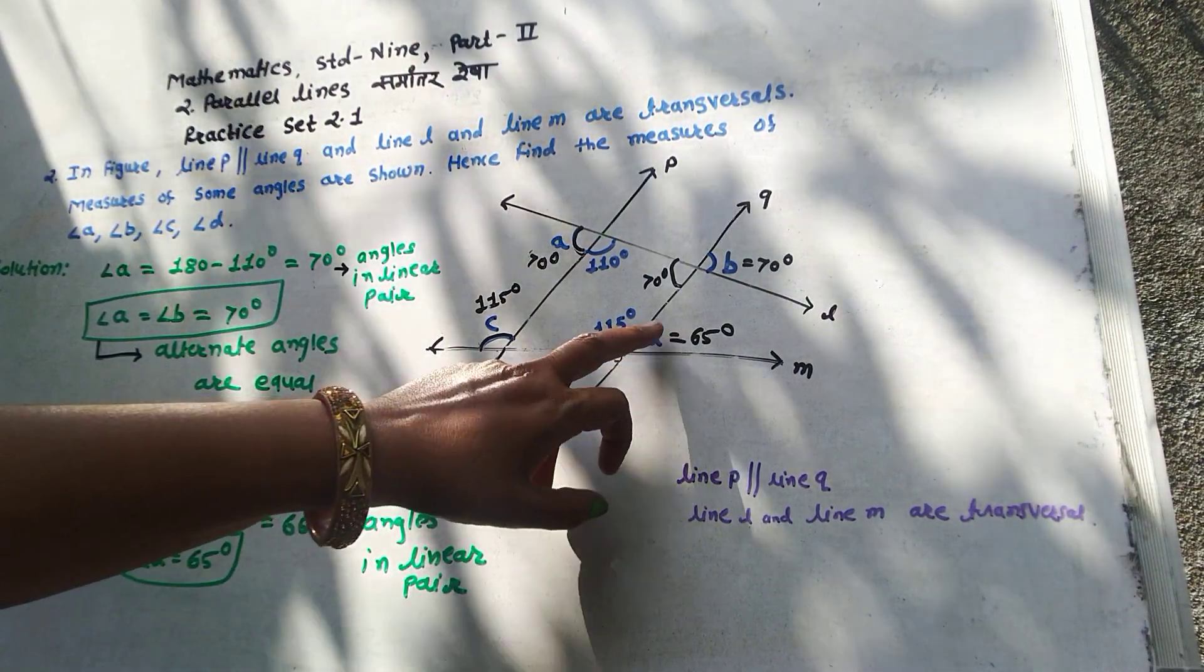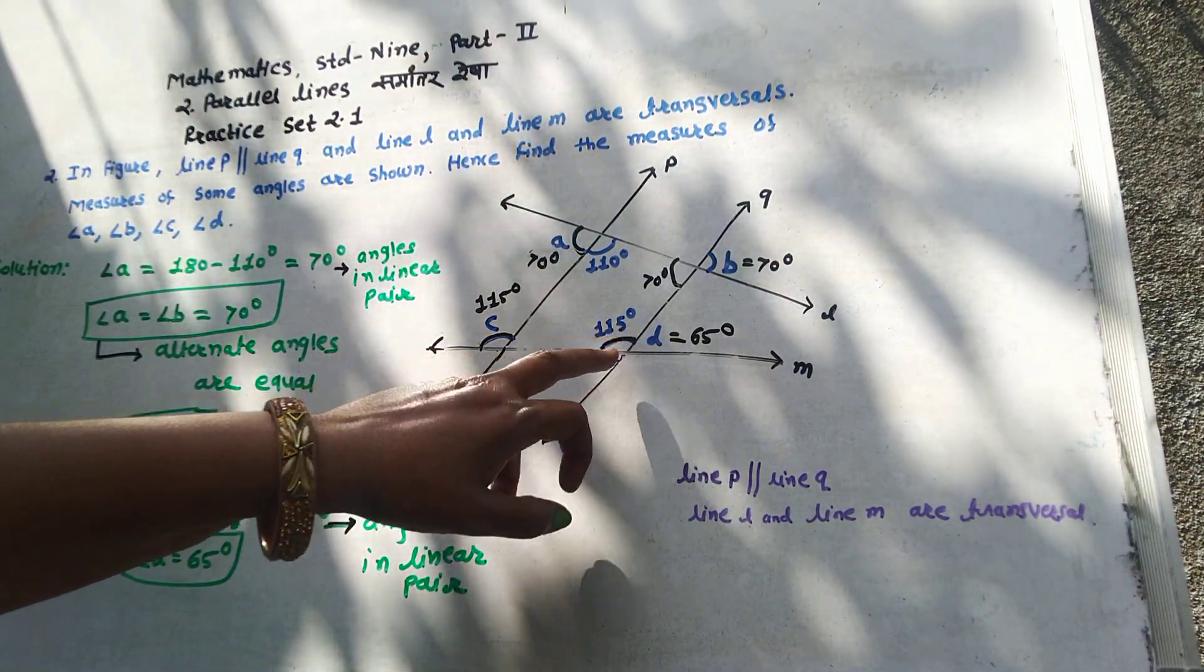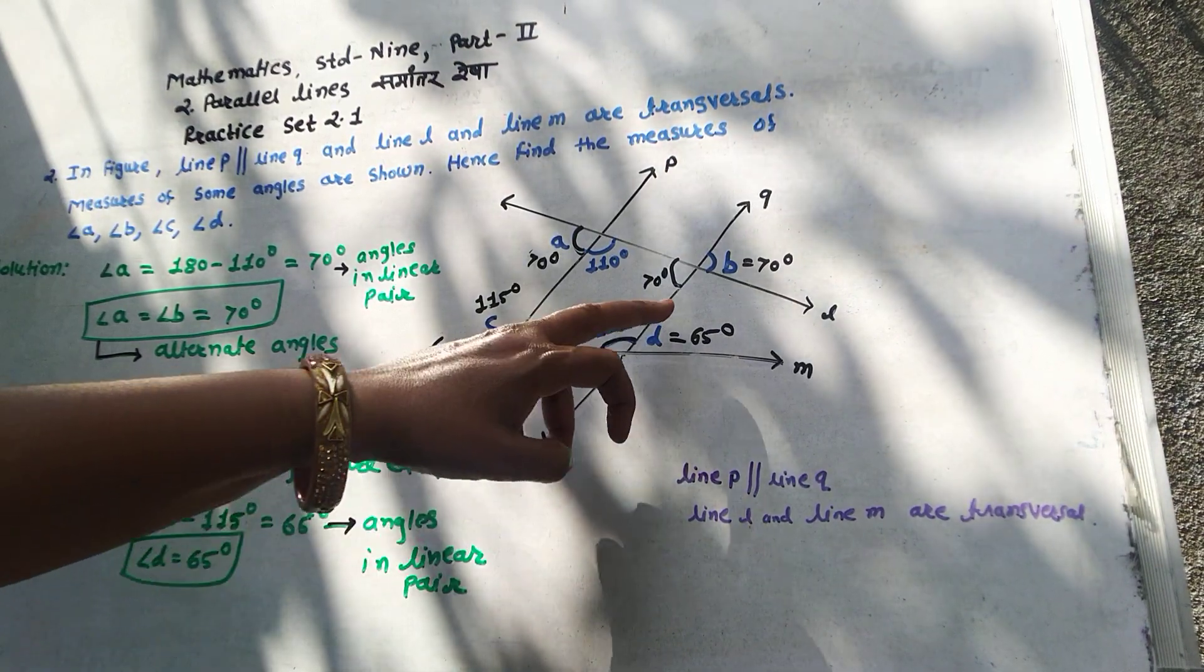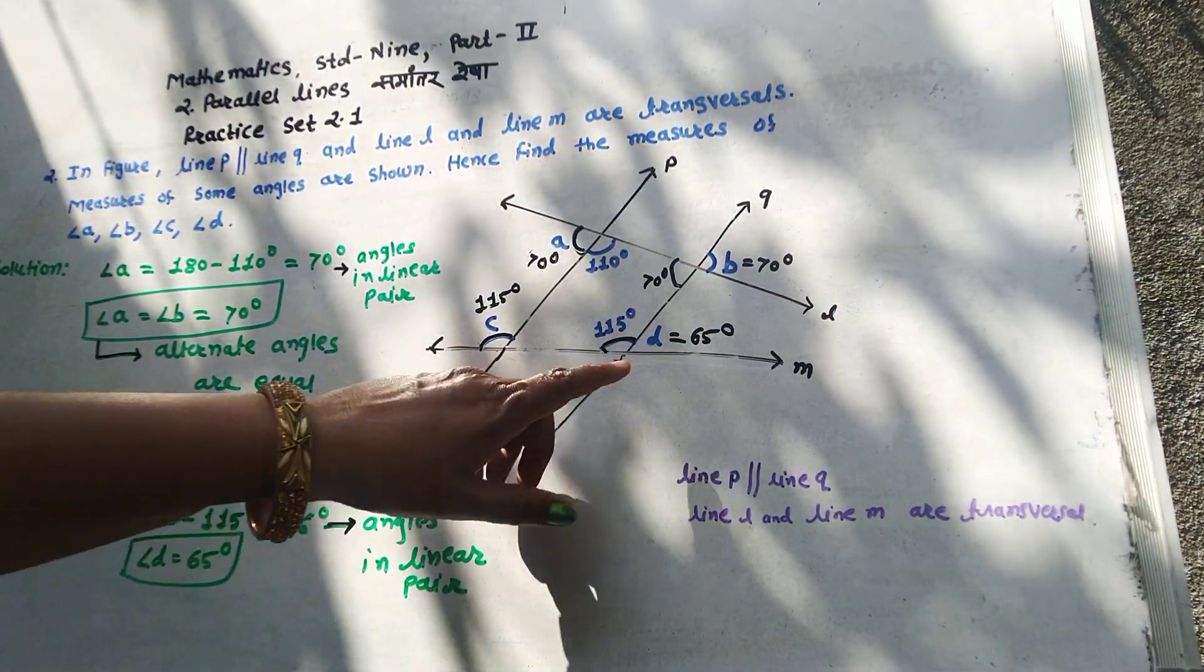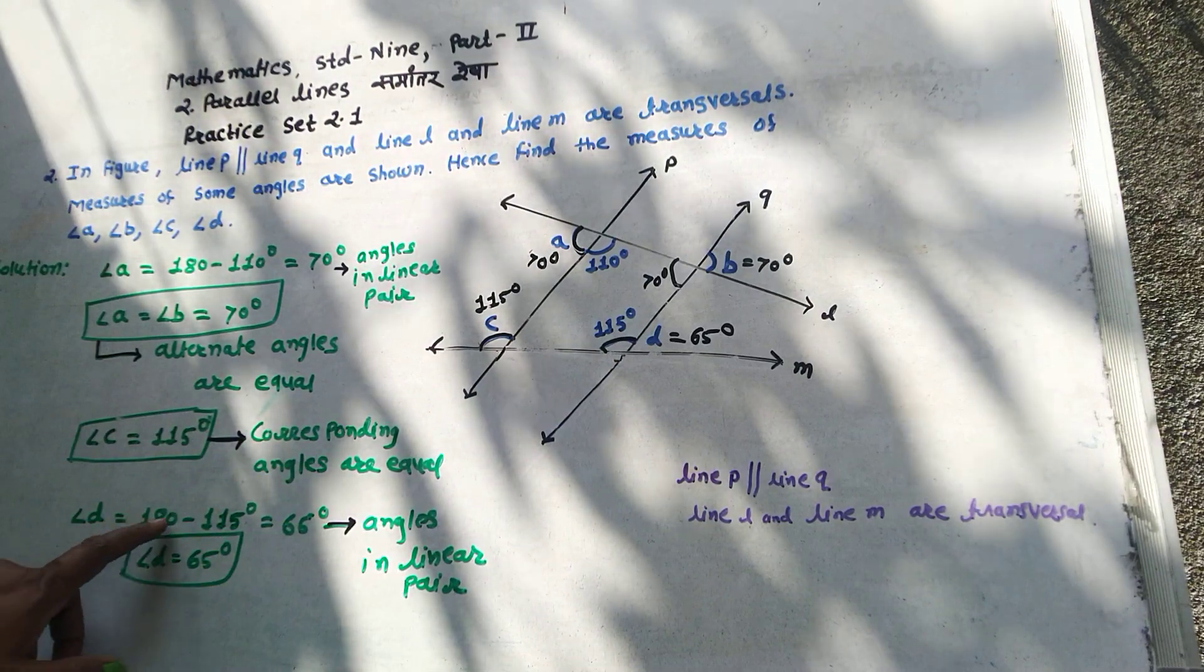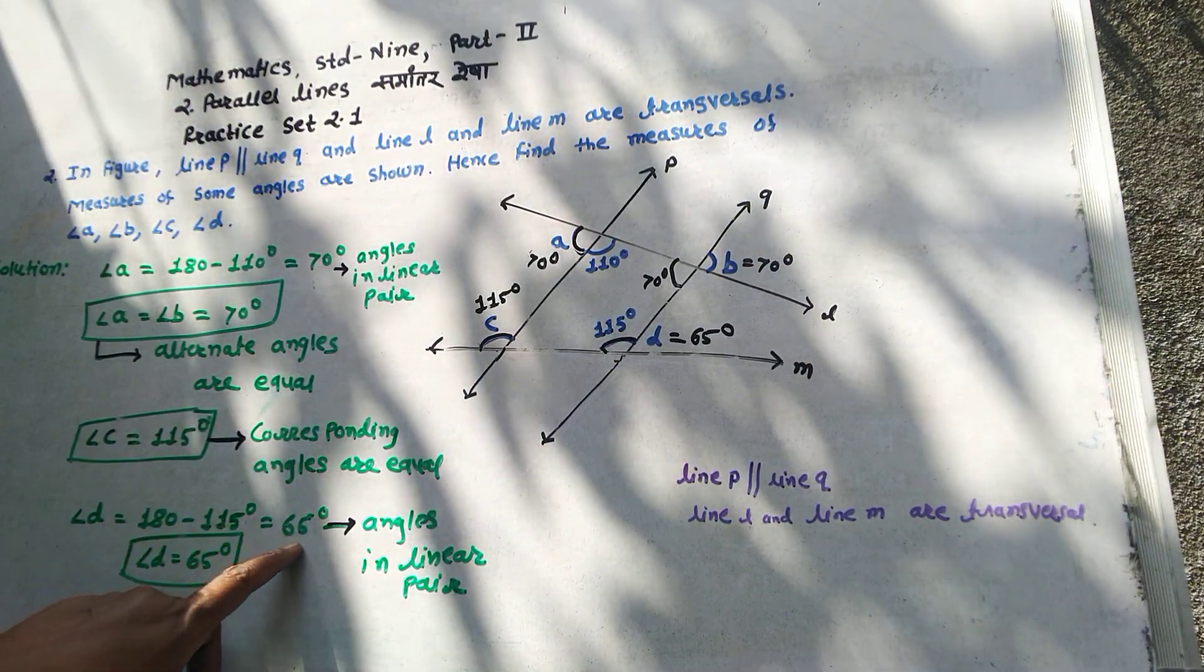Angle D and the 150-degree angle, the addition of these two is equal to 180. Why? Because these two are angles in a linear pair. Therefore, angle D is equal to 180 minus 115 is equal to 65 degrees.